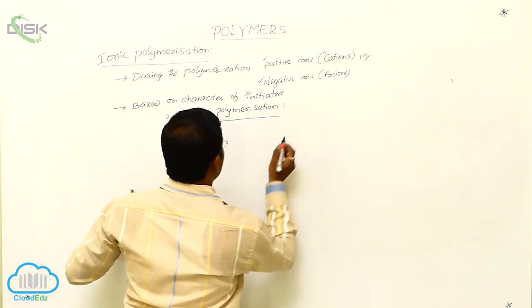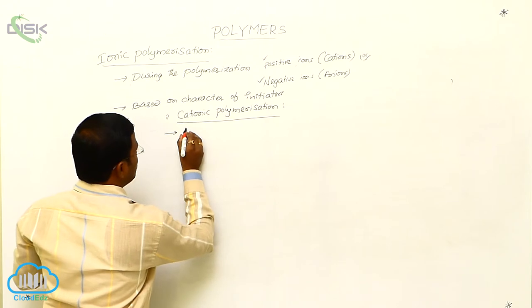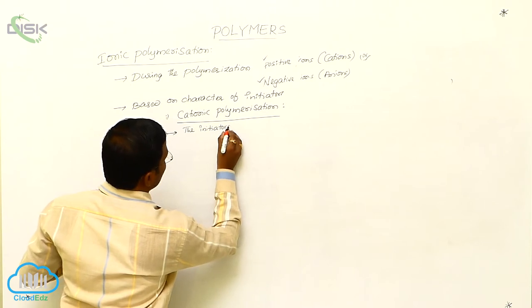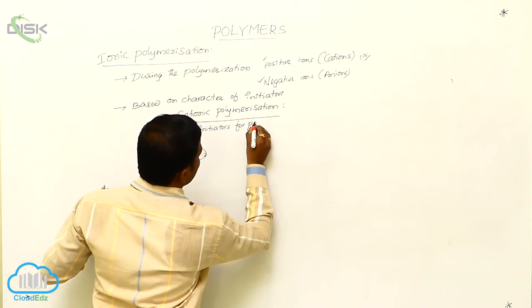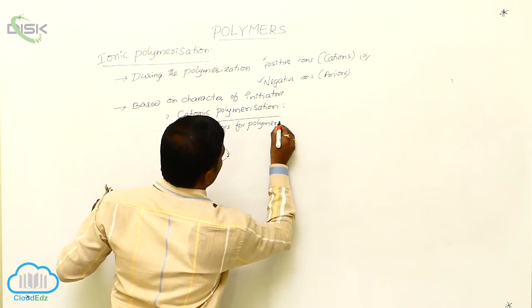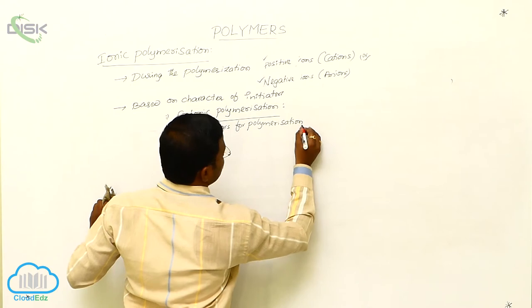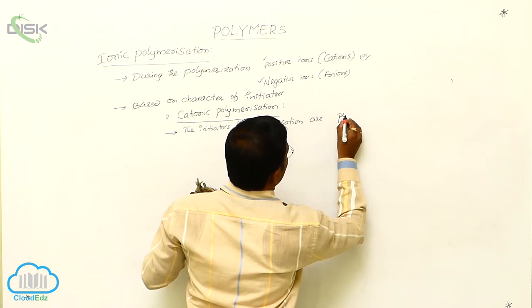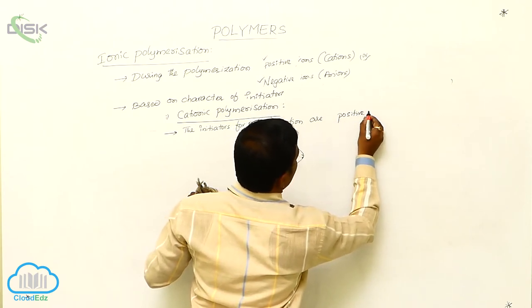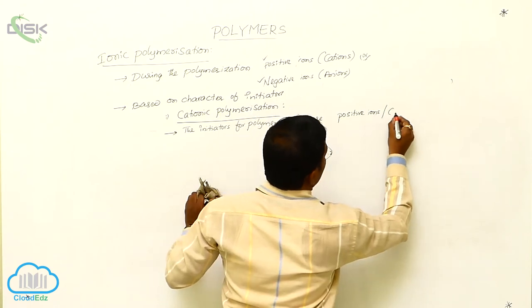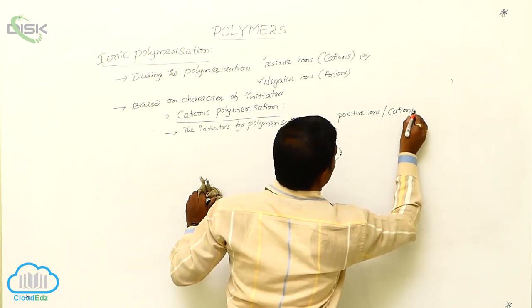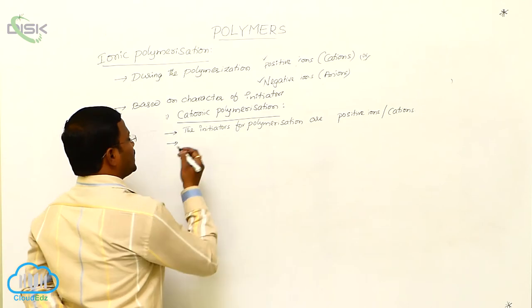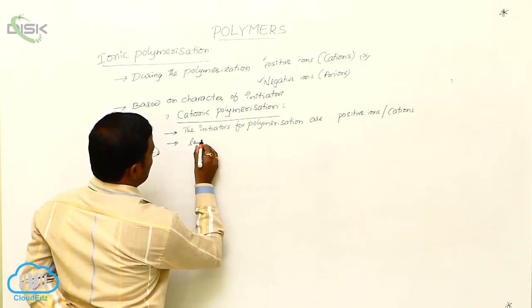Before explaining cationic polymerization, we need to understand that the initiators for cationic polymerization are positive species, i.e., positive ions or cations. Generally, this type of polymerization is expected from Lewis acids.